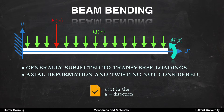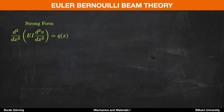After giving a brief introduction, let's talk about how we can mathematically express the deflection for a beam. In order to express the deflection we can use Euler-Bernoulli beam theory. As you can see on the slide, this is a fourth-order differential equation and it represents the strong form.